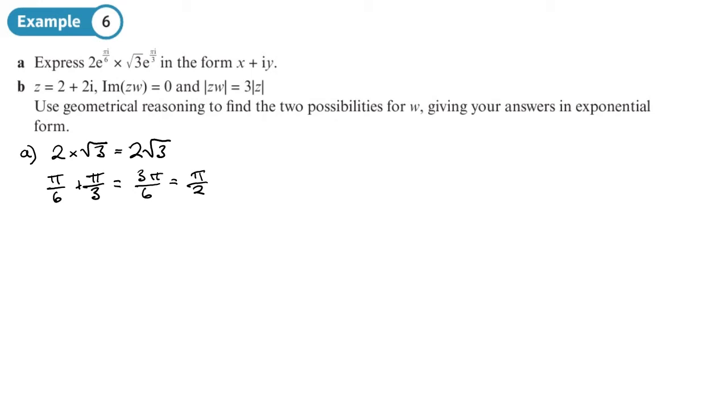So in exponential form we have 2√3 e^(iπ/2). We want to convert it to x + iy, so I would suggest we write it in cos sine form: 2√3 (cos π/2 + i sin π/2). Now you may recognize that actually, because of the argument of π/2, this is on an argand diagram, this would just be pointing straight up.